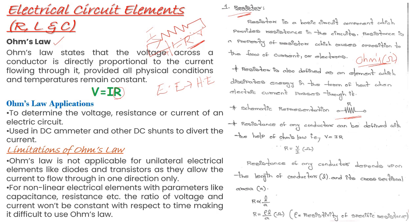What is Ohm's law? This is very important. We will see the statement of Ohm's law, followed by its applications, and then its limitations. The statement: at constant temperature and pressure — remember these two terms — the voltage applied across a circuit is directly proportional to the current flowing through that circuit. So from the definition we can write V is directly proportional to I, where V is the voltage or potential difference applied across the circuit and I is the current flowing through that circuit.